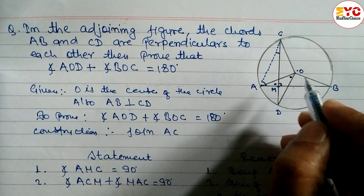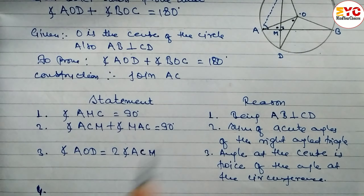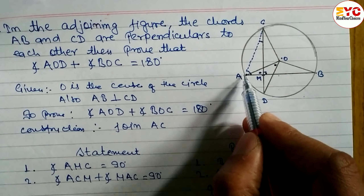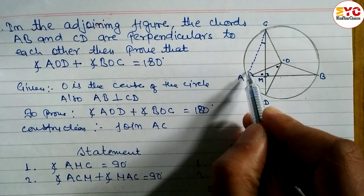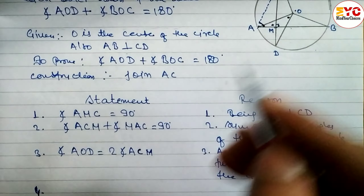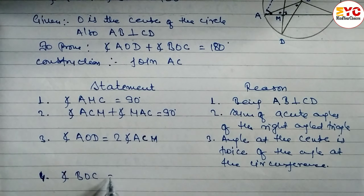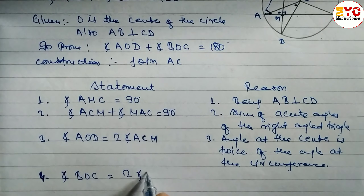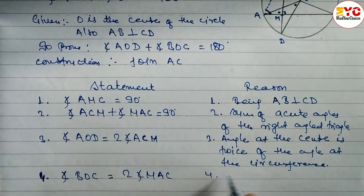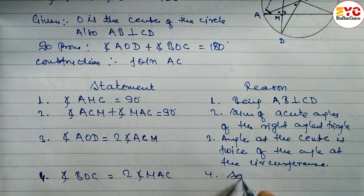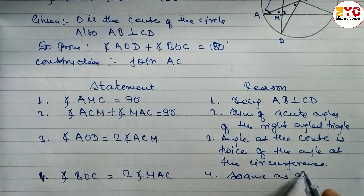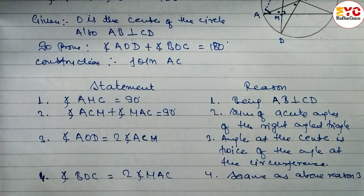Both BAC and MAC refer to the same angle. Reason: same as above, reason 3 — the central angle is double the inscribed angle.